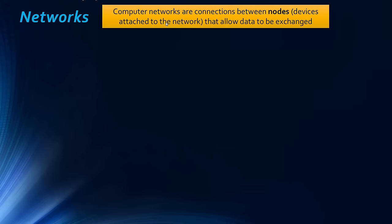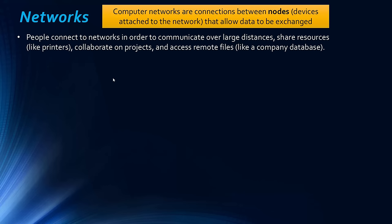What we can do is start this topic by defining what a computer network is. Networks are connections between nodes — a node in this context is just a device attached to the network — and the whole idea is that data can be exchanged. People connect to networks to communicate over large distances, share resources like printers, collaborate on projects, and access remote files like a company database.